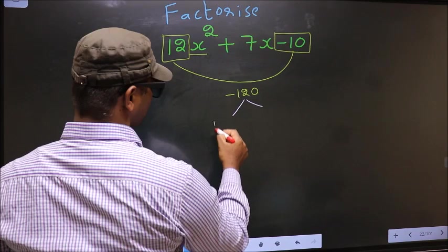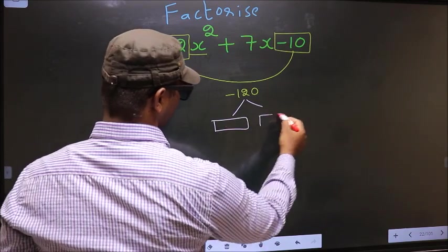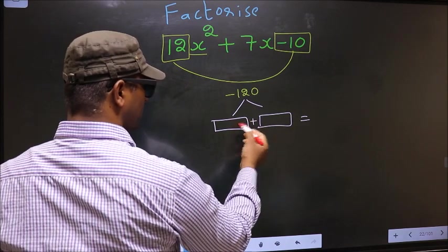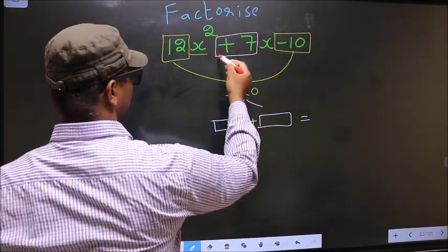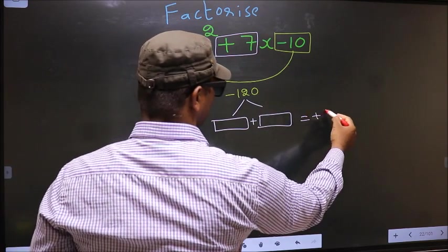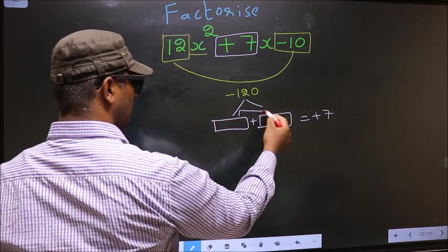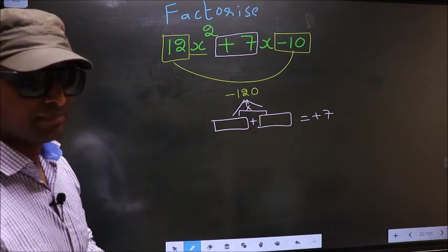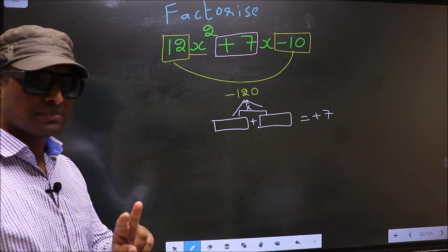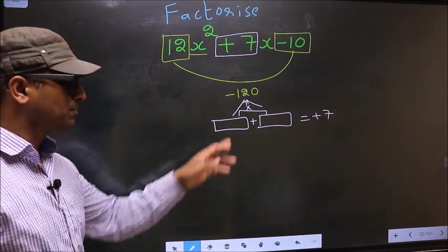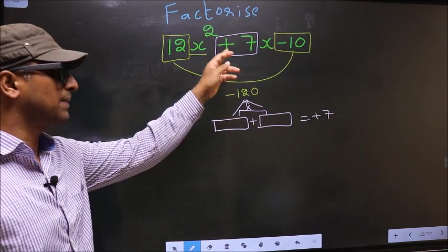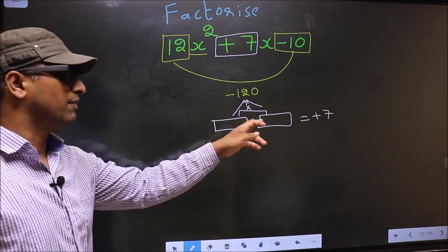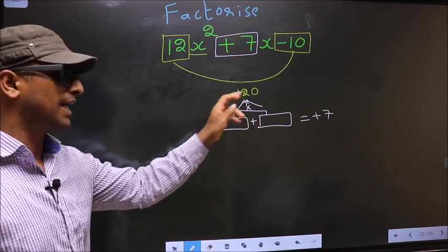Now you should look out for two numbers such that when you add these two numbers you should get the middle coefficient, that is plus 7, and also when you multiply them you should get minus 120.